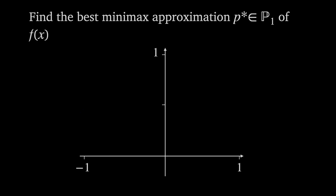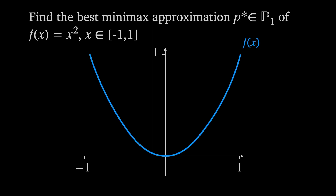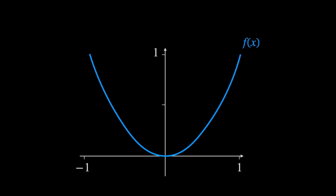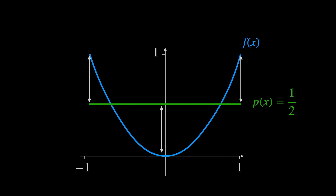Here's an example: find the best minimax approximation p* in P₁ of f(x) = x² over the interval [-1, 1]. This example doesn't require calculation, just some thought. P₁ is the set of straight lines, so the question is: which straight line minimizes the maximum difference between it and x²? The answer is p(x) = 1/2, a straight line where the maximum differences occur at x = -1, 0, and +1, where f(x) - p(x) equals 1/2, -1/2, and 1/2 respectively.